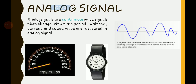Let's start with analog signals. Analog signals are continuous wave signals that change with time period. Voltage, current, and sound waves are measured as analog signals. This means analog signals work with a continuous flow of data — there are no breaking points here.